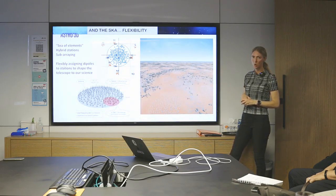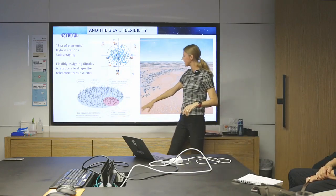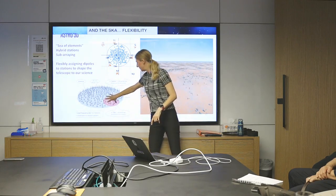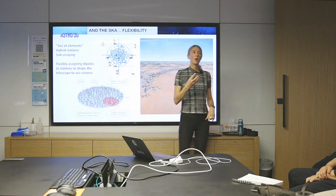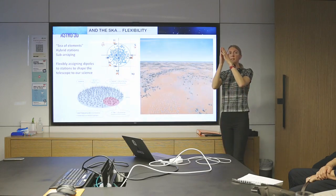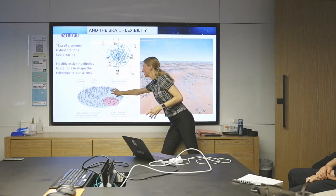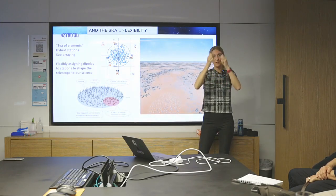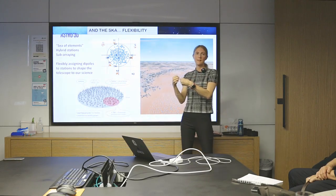So it's been talked about as the sea of elements. Sea of elements is a bit of a stretch. That was a vision where really the dipoles were just randomly laid out over that kilometre. That's not going to be the case. But instead, we're going to have something that's closer to this sort of hybrid station or sub-arraying idea, which is where within a station itself, we can select a subset of dipoles and instead use that as a station, have another one next to it, another one next to it, and suddenly you have a telescope that has very different properties. If your stations get smaller, that means that they see a larger field of view of the sky.